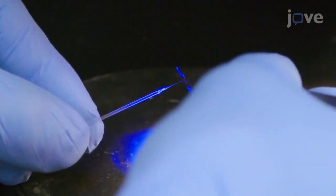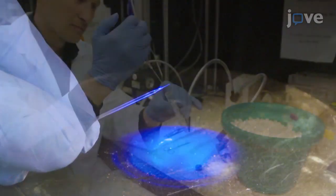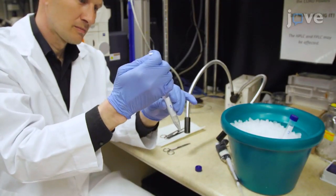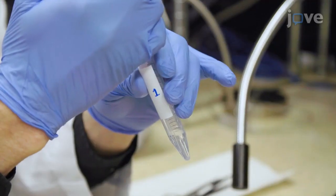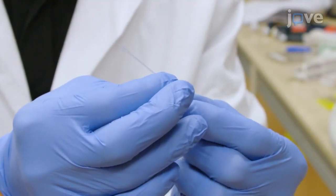Break the tip of the borosilicate needle using fine forceps. Load the syringe with 50 to 200 microliters of the cancer cell suspension, and insert the borosilicate needle into the tubing.